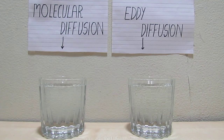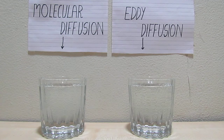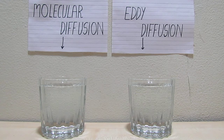Hello, let us perform a small experiment to demonstrate molecular diffusion and eddy diffusion. For this experiment, we have taken two samples of water. The next step in the procedure is to add two drops of food color to each sample.